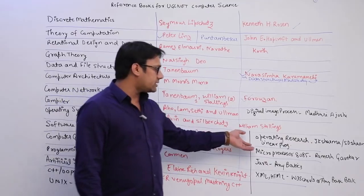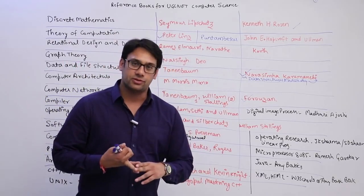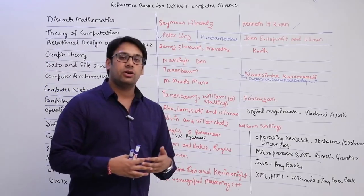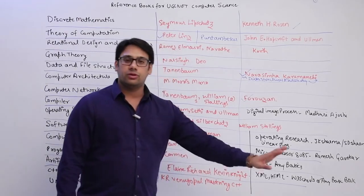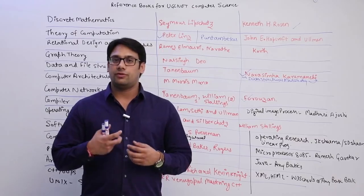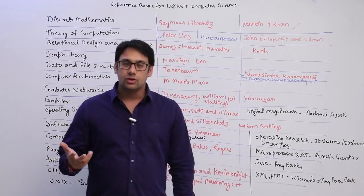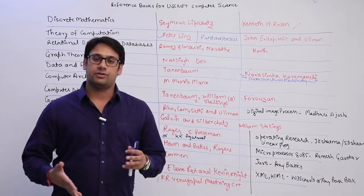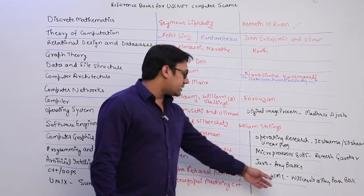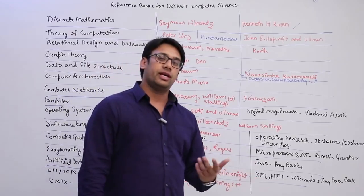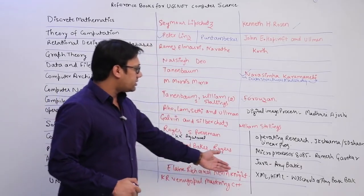For Operations Research, also called Linear Programming, refer JK Sharma or SD Sharma. For Microprocessor, refer Ramesh Gaonkar. Note that subjects like UNIX and Digital Image Processing carry only one or two marks — last time they didn't ask even a single question from UNIX, so you can skip it if you want. For Java, any basic book works since they only ask object-oriented programming concepts at a simple level. For XML, HTML, and web development, you can refer W3Schools online or any standard book — these are comparatively easy subjects.